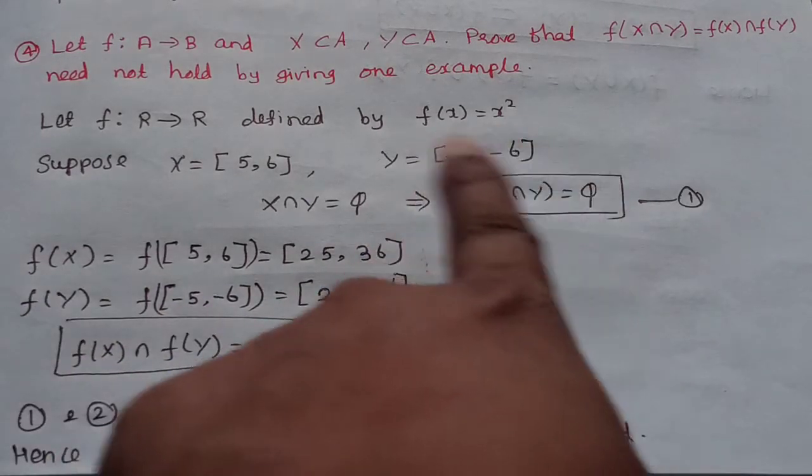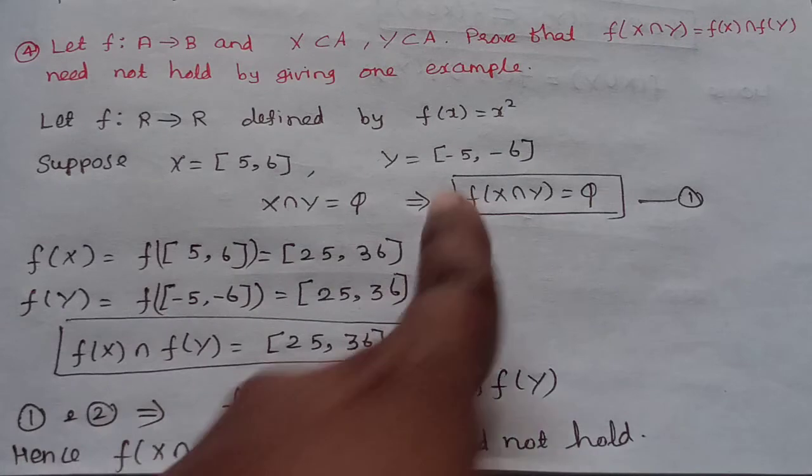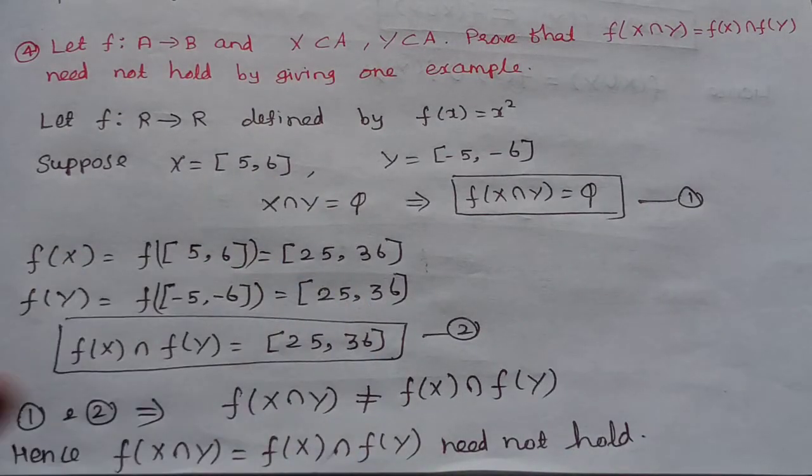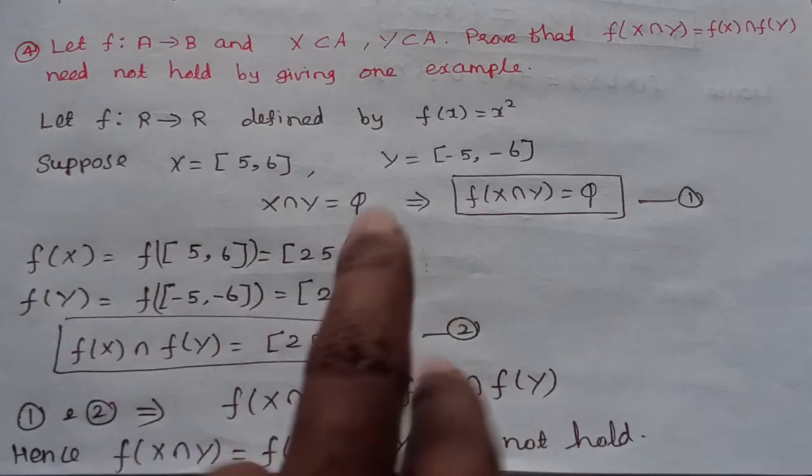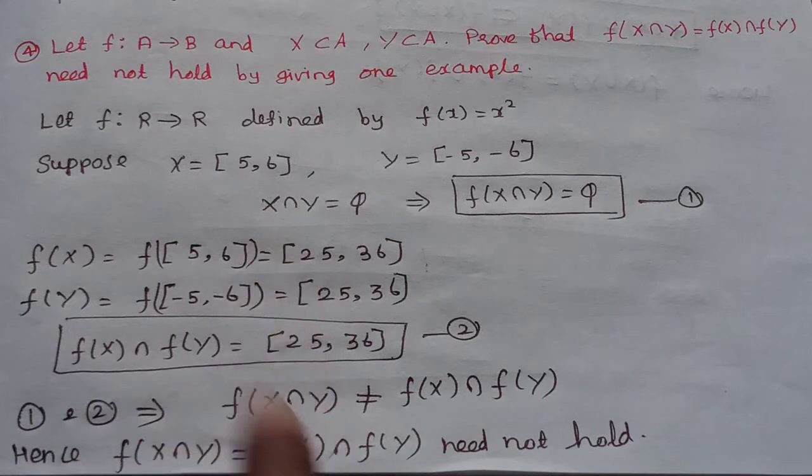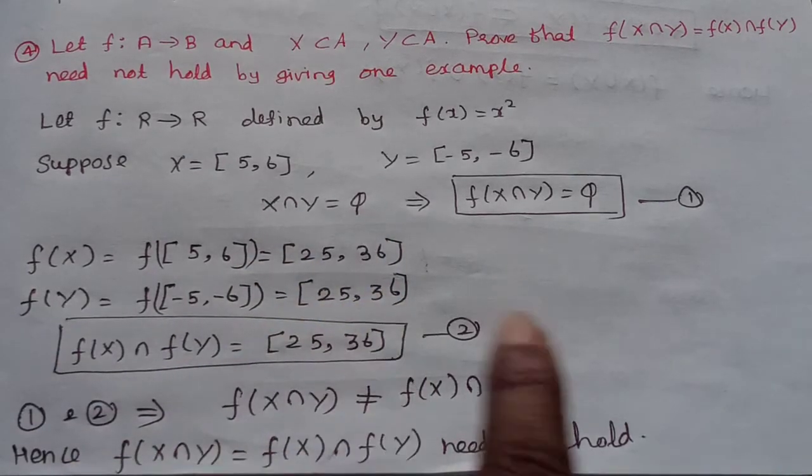We will find f(Y) for the closed interval [-5,-6]. Again, by applying the same definition f(y) = y², we get [25,36]. The two are equal. So f(X)∩f(Y) is nothing but the closed interval [25,36].